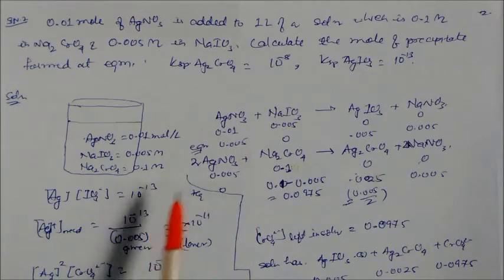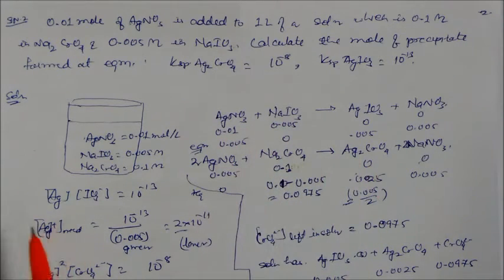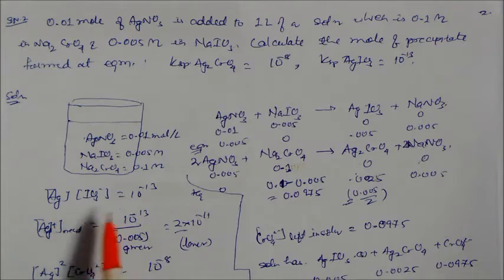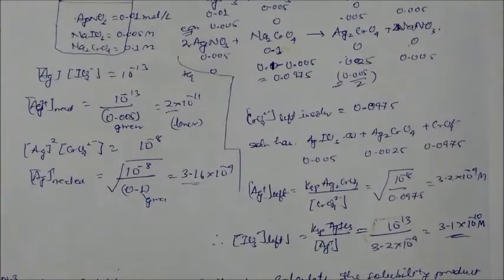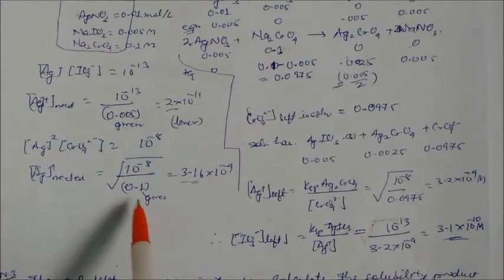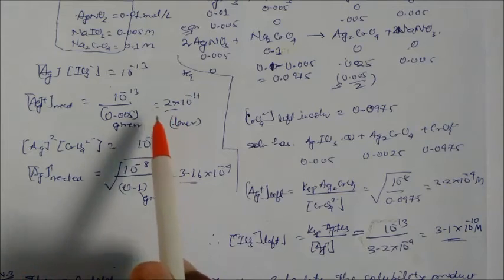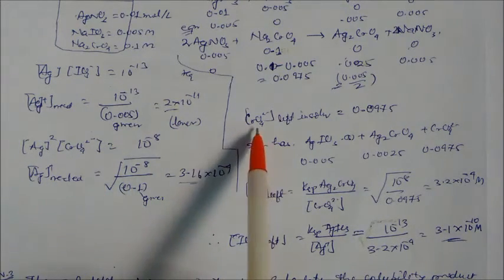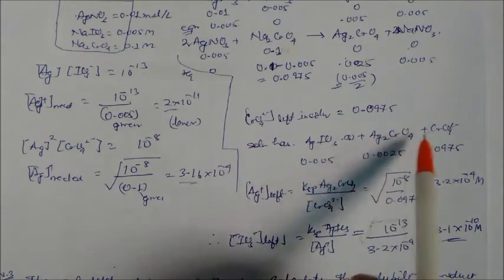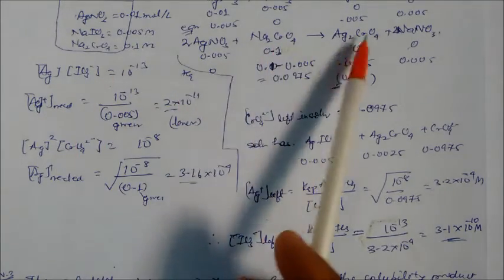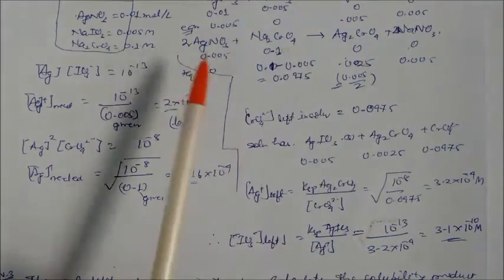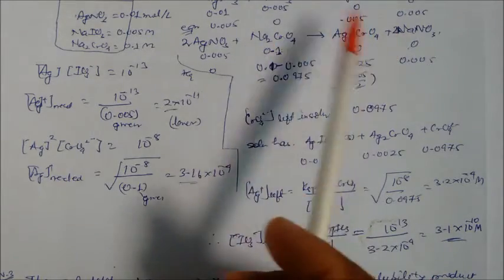All silver is converted into silver iodate and silver chromate precipitates. The concentration of silver required for silver iodate: with iodate concentration 0.005 molarity, the silver needed is 2 × 10⁻¹¹. For silver chromate with chromate 0.1 molarity, the silver needed is 10⁻⁸ divided by 0.1, giving 3.16 × 10⁻⁴. Lower solubility means silver iodate precipitates first. The solution contains silver iodate, silver chromate, and remaining ions: sodium nitrate, chromate, and iodate.